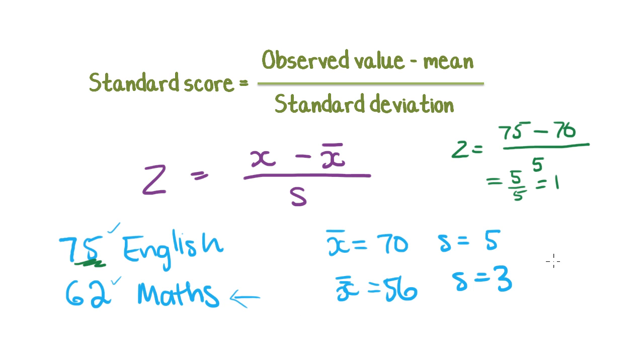Now for this one, let's work out the z-score. z is equal to the observed value, which in this case is 62, minus the mean, which is 56, divided by the standard deviation, which is 3. So when you work that out, you get 6 divided by 3, which is 2. So this test result is exactly two standard deviations above the mean.